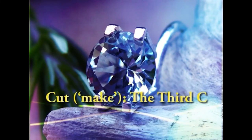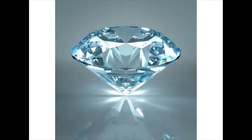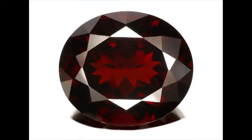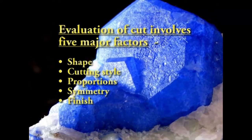Cut, the third C: the function of the cut is to display the gem's inherent beauty to the greatest extent possible. Since this involves aesthetic preferences upon which there is little agreement — such as shape and faceting styles — this is the most subjective of all aspects of quality analysis. Evaluation of cut involves five major factors: shape, cutting style, proportions, symmetry and finish.